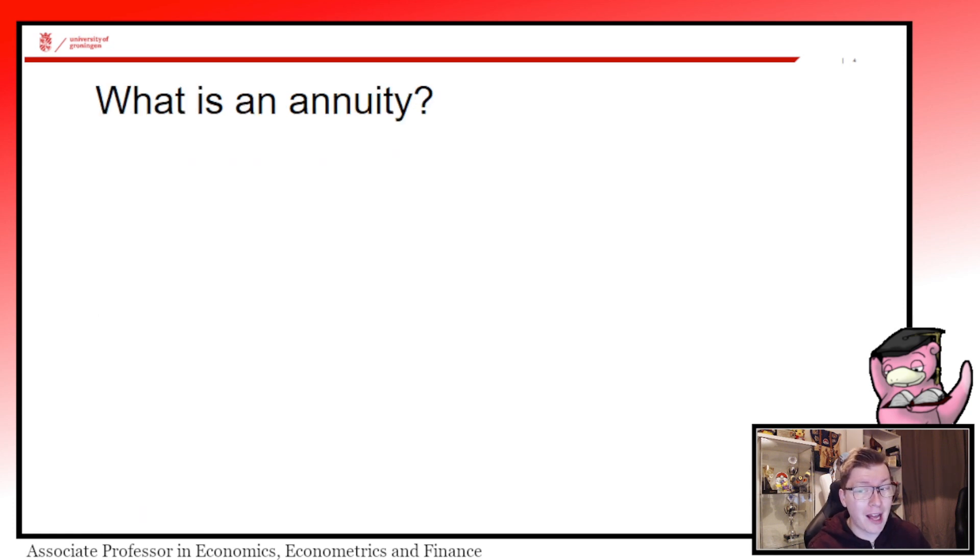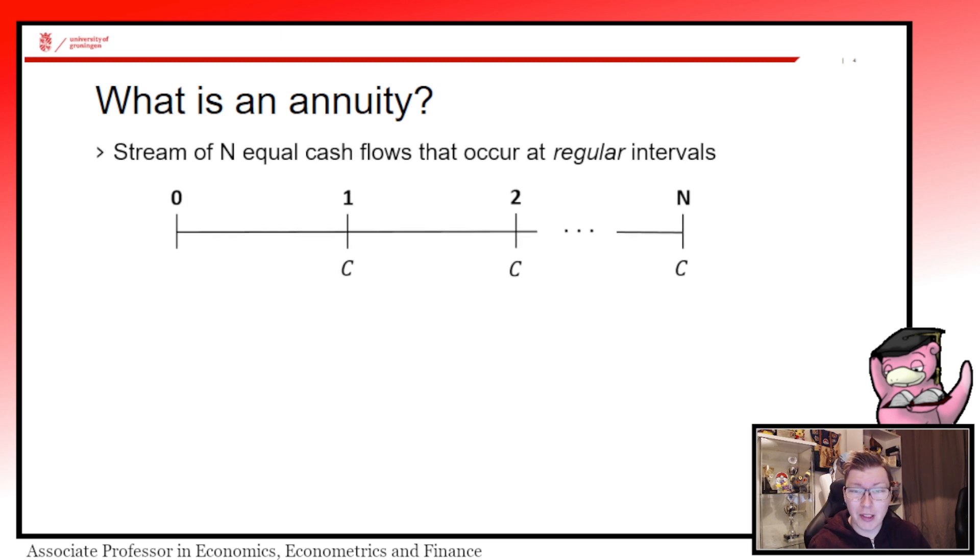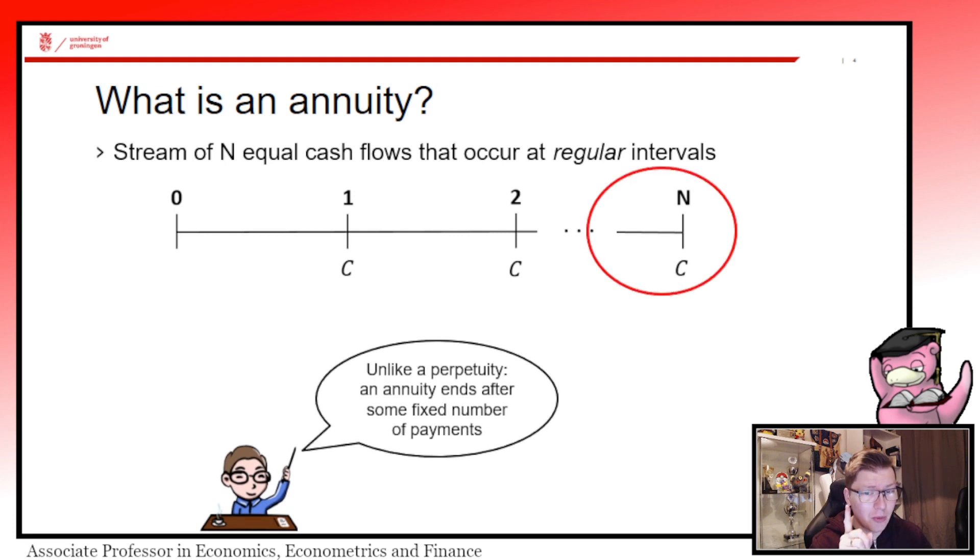What is an annuity? It's a stream of N equal cash flows that occur at regular intervals. Notice here that it's N cash flows. Unlike a perpetuity, an annuity ends after some fixed number of payments. You can see what has been depicted with a red circle - there's an ending time here, it doesn't go on forever like a perpetuity.